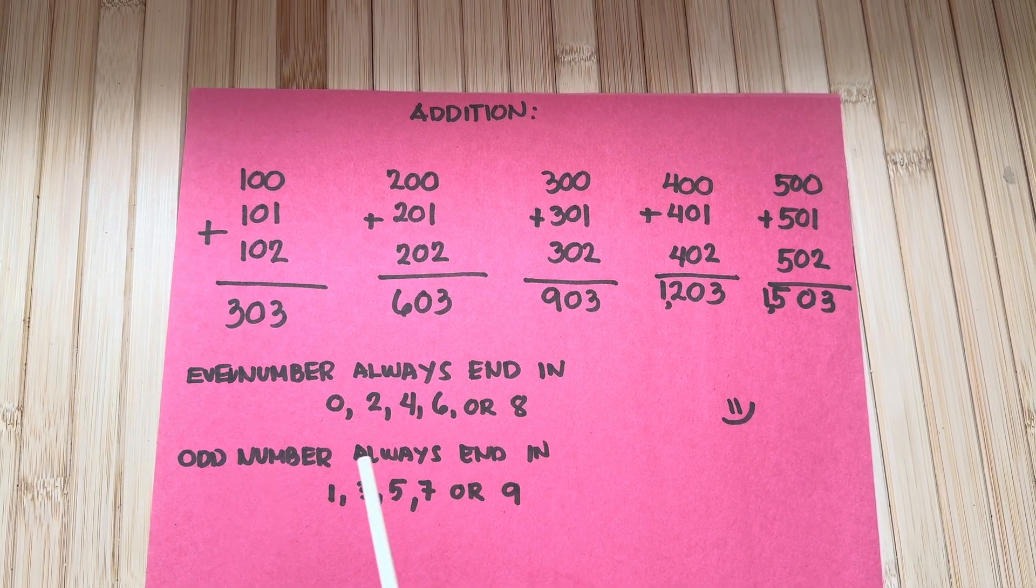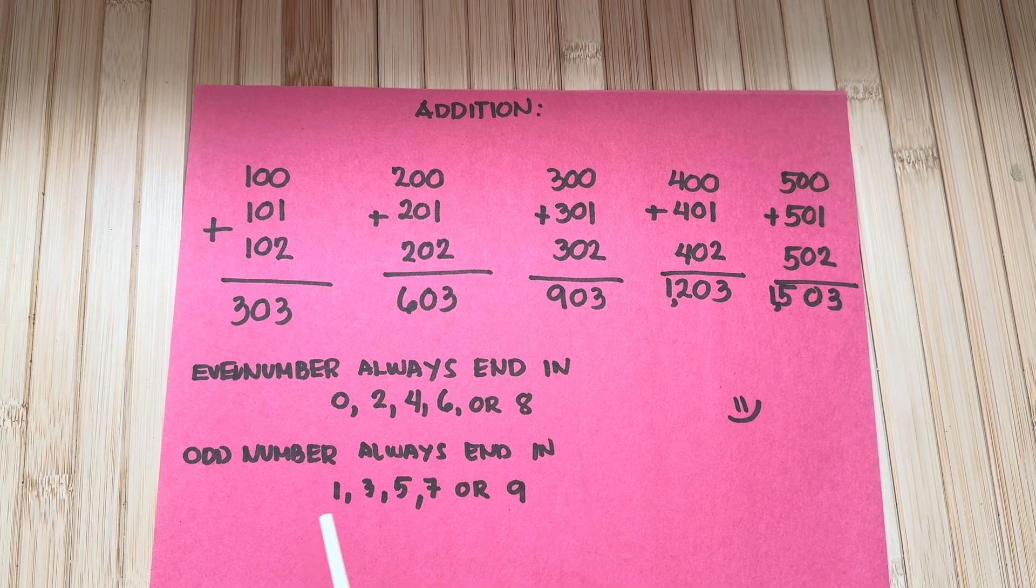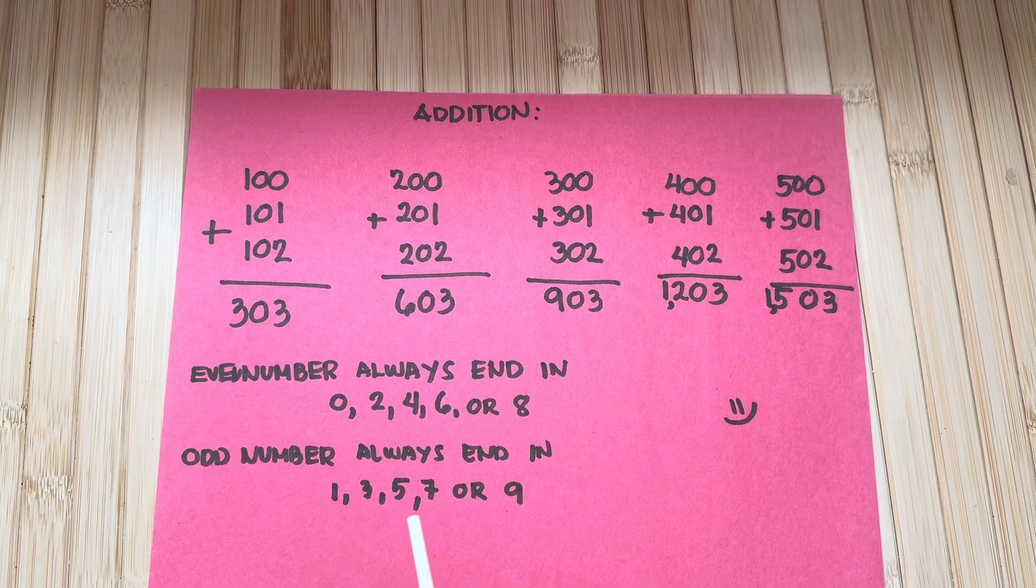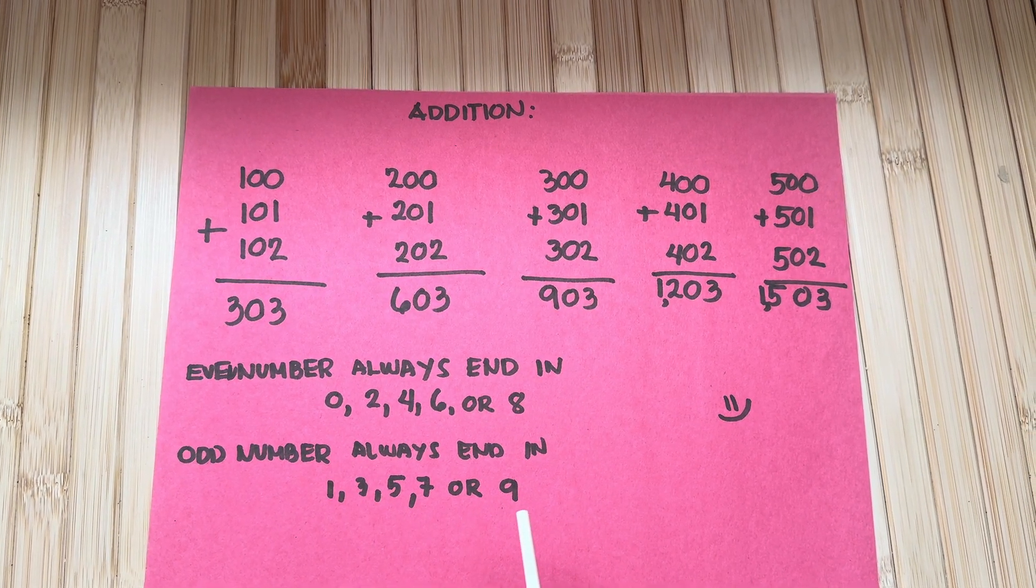Odd numbers always end in 1, 3, 5, 7, or 9.